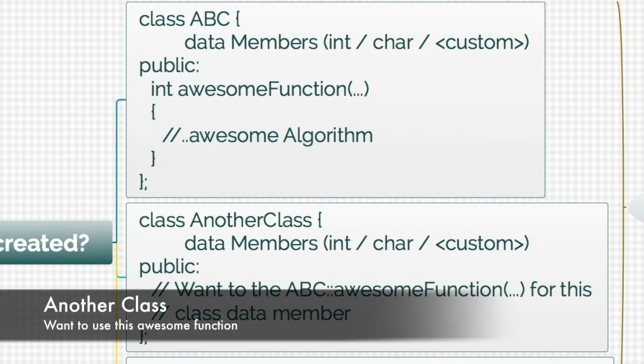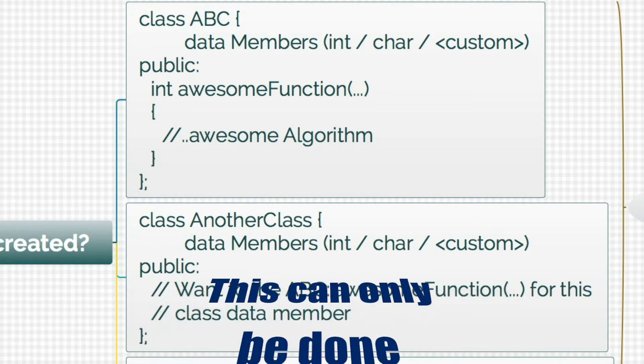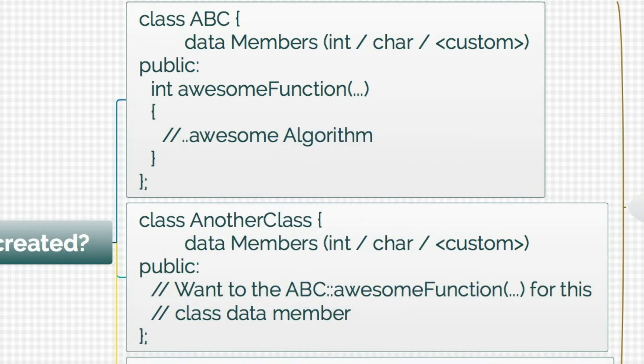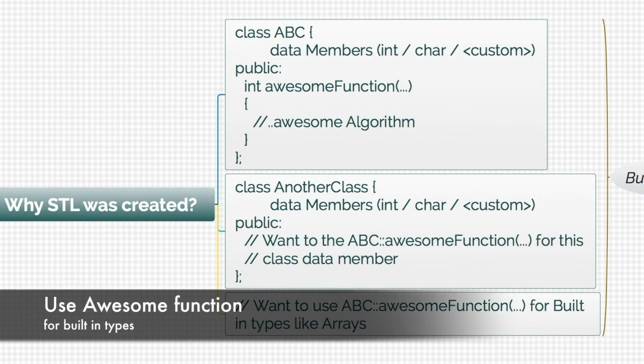But this can only be done if we create a class object of ABC inside another class, creating dependency. Worst, what if we'd like this awesome function to work on built-in types like arrays and other built-in types?